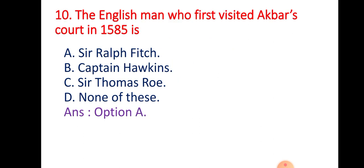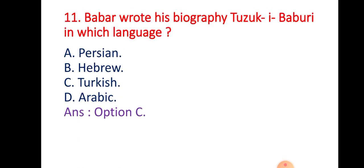Question 10: The Englishman who first visited Akbar's court in 1565 was — Option A: Sir Ralph Fitch; Option B: Captain Hawkins; Option C: Sir Thomas Roe; Option D: None of these. The right answer is Option A — Sir Ralph Fitch.